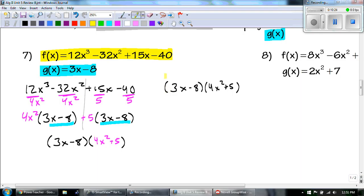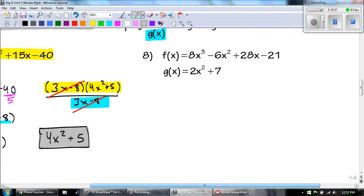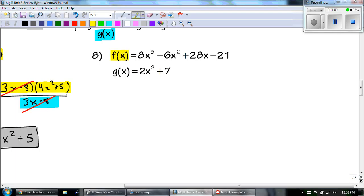Well, what goes into both 12 and 32? Yeah, it's a 4. And it's 4x squared. So the 4x squared goes out front. 12 divided by 4 is 3. And then we get 3x. Negative 32 divided by 4 is a negative 8. 15 and 40. The only thing that goes into both of those is a positive 5. The highest thing. So, 15 divided by 5 is 3x. And negative 40 divided by 5 is a negative 8.